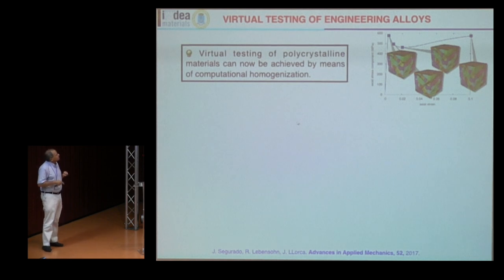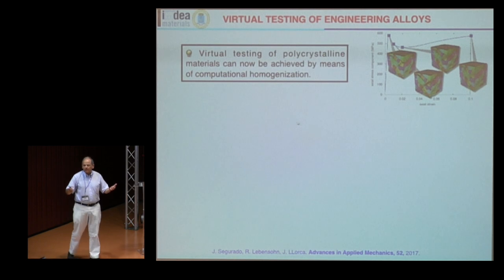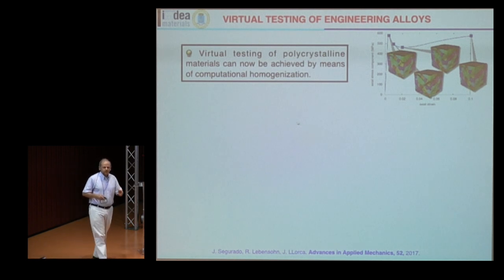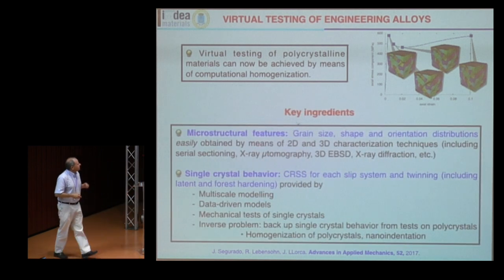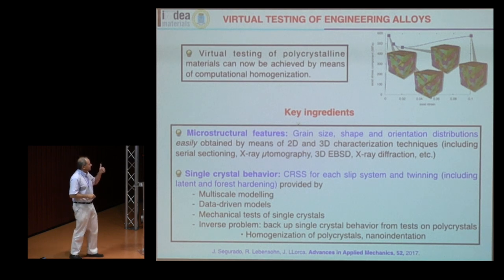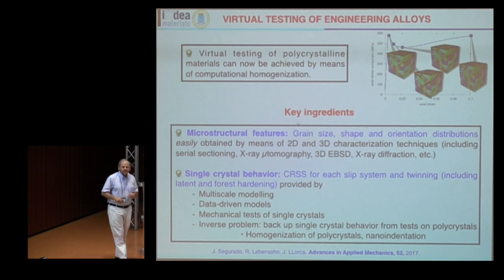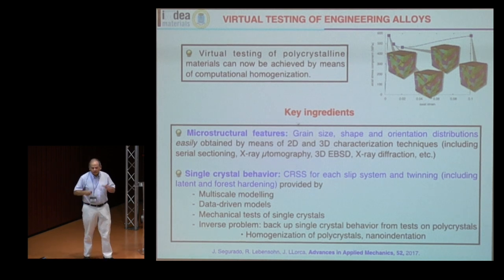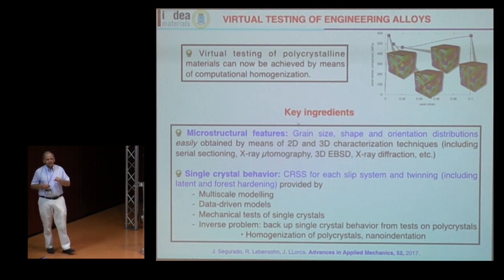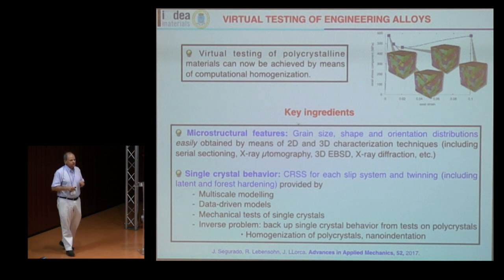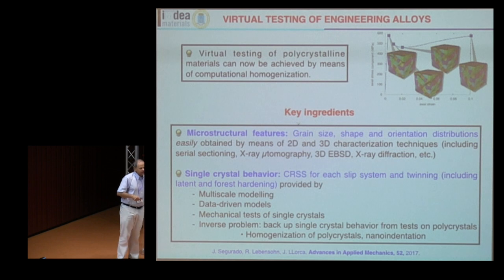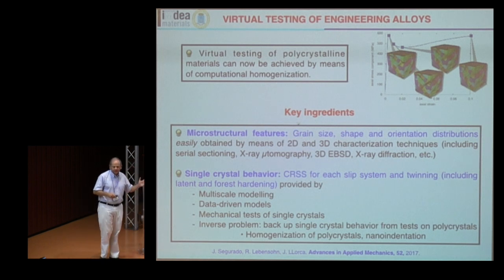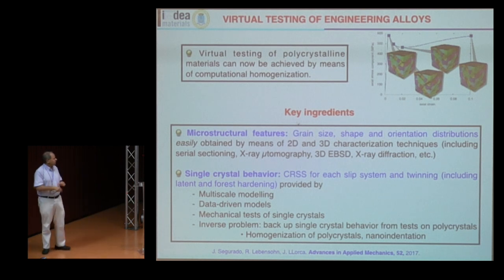What we want to do is virtual testing of engineering alloys — to know the mechanical behavior of a polycrystal. In order to get it right, you need two main ingredients. First, you need all the microstructural features: grain size, shape, and orientation distributions. These can be obtained today by 2D and 3D characterization techniques such as serial sectioning, X-ray microtomography, 3D EBSD, and X-ray diffraction. The second ingredient — and this is actually the bottleneck nowadays — is the single crystal behavior: the critical resolved shear stress for each slip system and for twinning, plus latent and forest hardening.